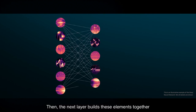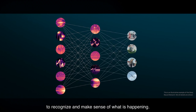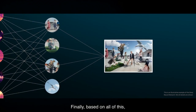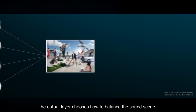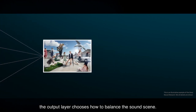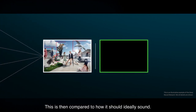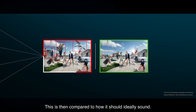The first layer extracts simple sound elements and patterns from the input. Then the next layer builds these elements together to recognize and make sense of what is happening. Finally, based on all of this, the output layer chooses how to balance the sound scene. This is then compared to how it should ideally sound.